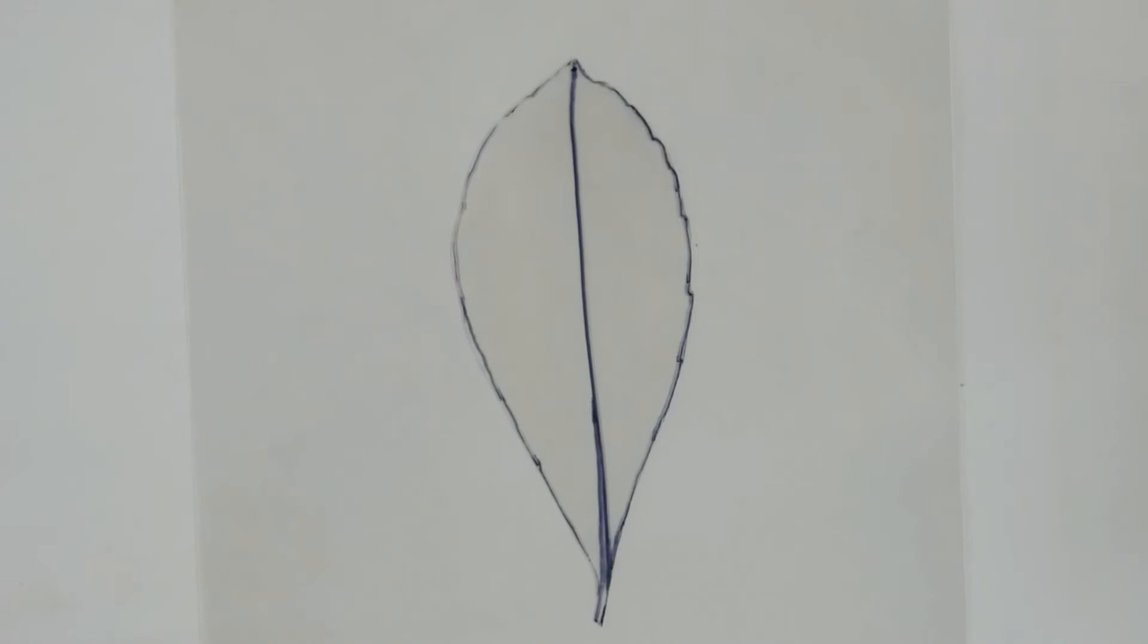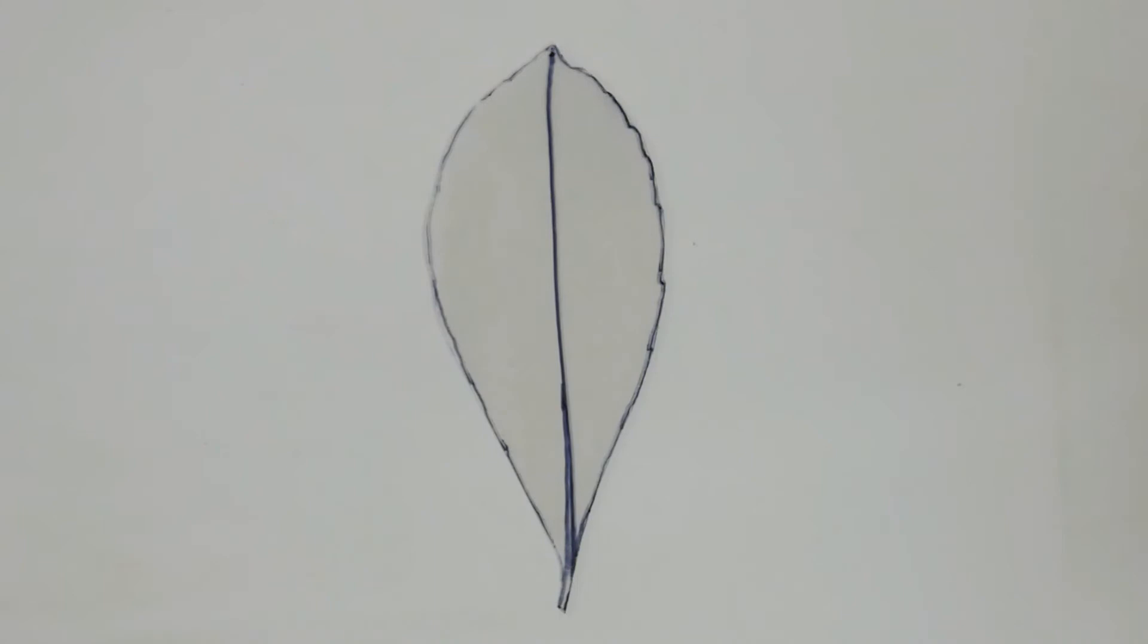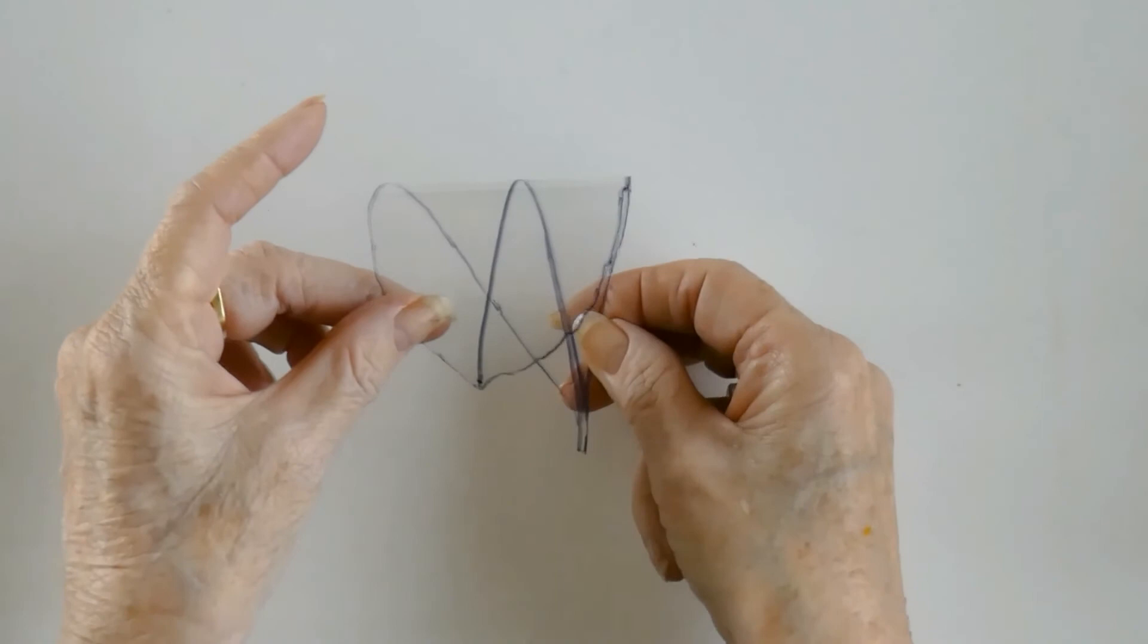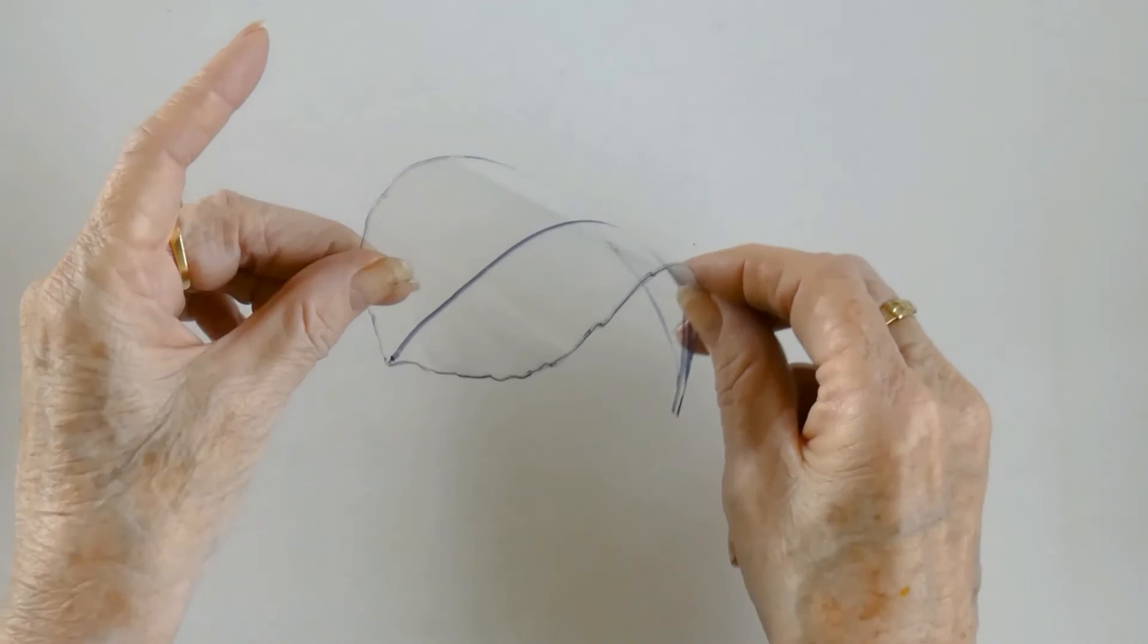Again ensure that you leave the marker pen visible around the edge of your leaf. All you do now is to pick up your leaf and look at how it would be if it was foreshortened, whatever angle it's on.